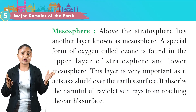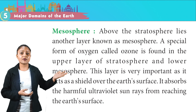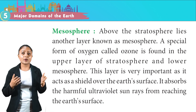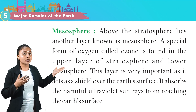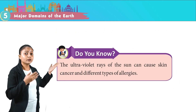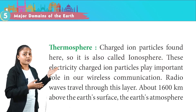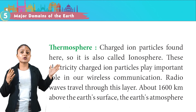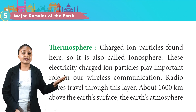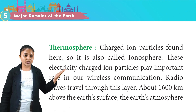Above the stratosphere lies another layer known as the mesosphere. A special form of oxygen called ozone is found in the upper layer of the stratosphere and lower mesosphere. This layer is very important as it acts as a shield over the earth's surface, absorbing the harmful ultraviolet sun rays. The thermosphere contains charged ion particles, so it is also called the ionosphere. These electrically charged ion particles play an important role in wireless communication; radio waves travel through this layer about 1600 km above the earth's surface.